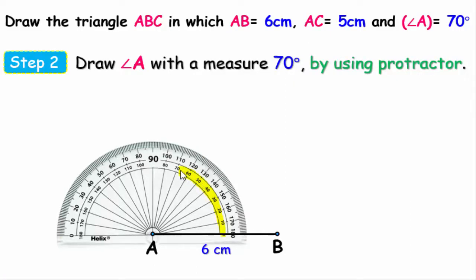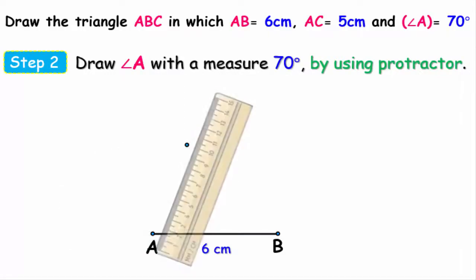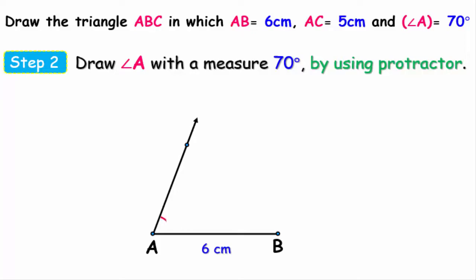And we put a dot at this measurement as follows. Then by using a ruler and pencil we draw a ray that starts from point A and goes to the dot like this. Now we've drawn angle A whose measure is 70 degrees.